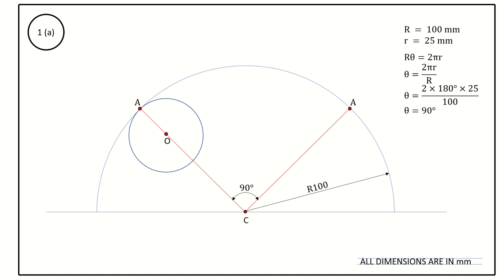AA equals 2πr in length. From the new point A, take a scale and measure 25 mm to locate the new point O. Take a compass, center point O, radius OA equals 25 mm, and draw a complete circle. We have now drawn both the initial and final positions of the generating circle.